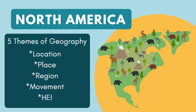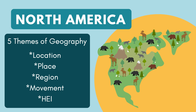As we study North America, we're going to apply the five themes of geography that we've been learning about. Location — where is it? Place — what is it like there? Region — what are some similarities or things an area has in common? Movement — movement of people, goods, and ideas. And HEI, or human-environmental interaction. As we study each continent, we will apply our understanding of these five themes.